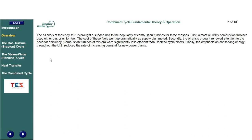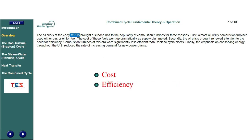The oil crisis of the early 1970s brought a sudden halt to the popularity of combustion turbines for three reasons. First, almost all utility combustion turbines used either gas or oil for fuel. The cost of these fuels went up dramatically as supply plummeted. Secondly, the oil crisis brought renewed attention to the need for efficiency. Combustion turbines of this era were significantly less efficient than Rankine cycle plants. Finally, the emphasis on conserving energy throughout the U.S. reduced the increasing demand for new power plants.